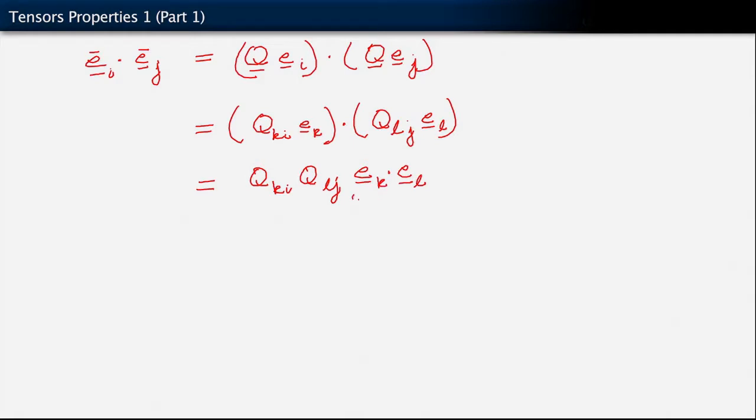What that allows us to do is to write out this expression as q_ki q_lj e_k dotted with e_l, using the properties of linearity of the dot product. But then we know already that because of the orthonormality of the original set of basis vectors, e_k dot e_l is delta_kl.